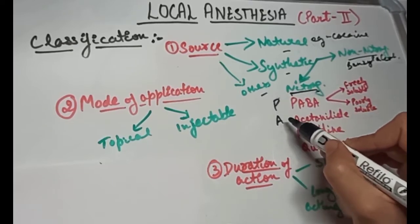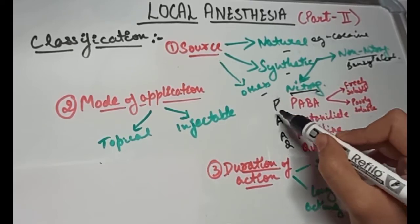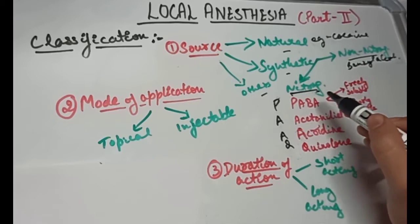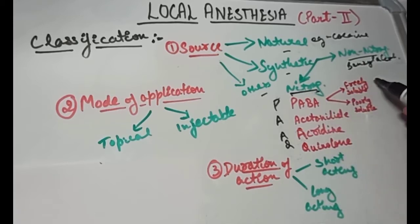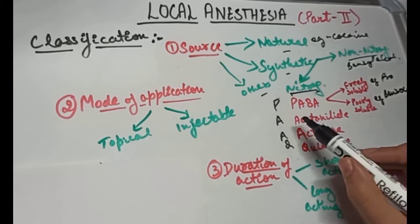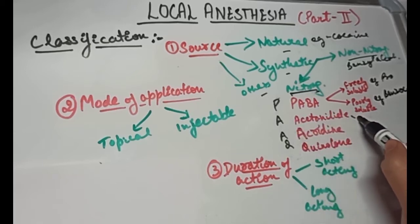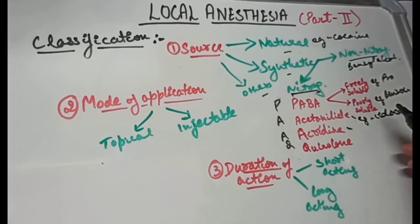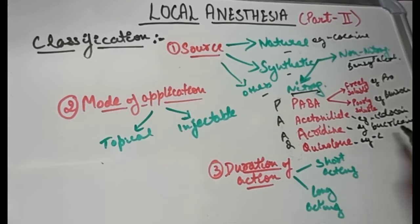For nitrogenous compounds, remember PARC: derivatives of paraminobenzoic acid which can be freely soluble like procaine and poorly soluble like benzyl alcohol. Then derivatives of acetanilide, example is lidocaine. Derivatives of acridine, example is bucricaine. Derivatives of quinolone, example is cinchocaine.